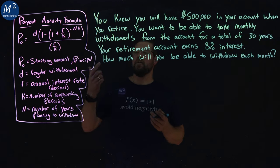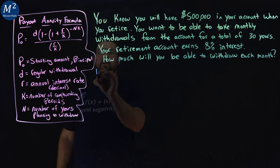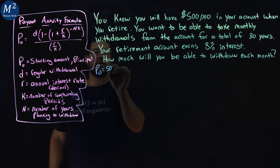Let's highlight which values we know. We're starting with $500,000 in our account, so that's our P₀, $500,000 right there.